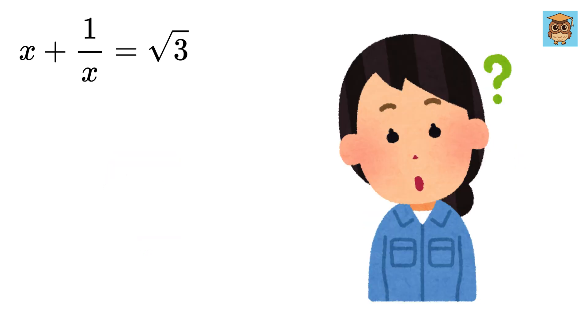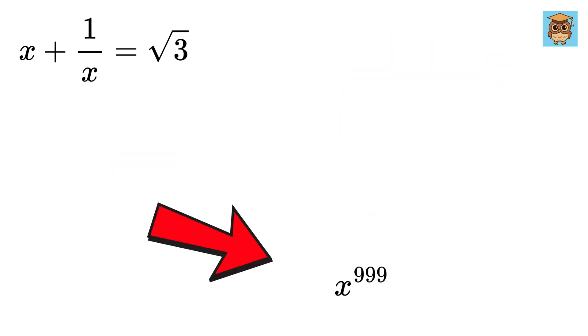We have this equation, and our job is to find the value of x to the 999 plus 1 over x to the 999.